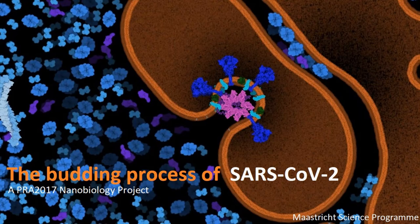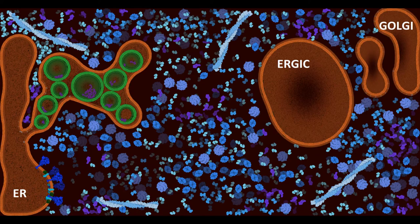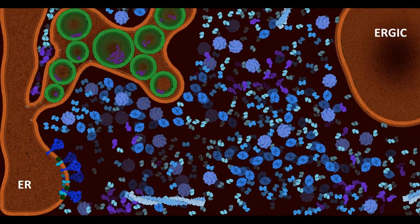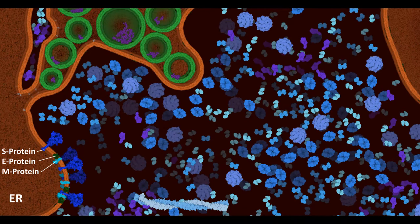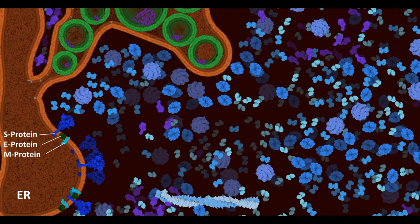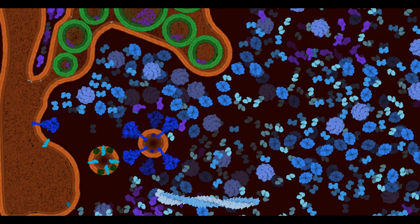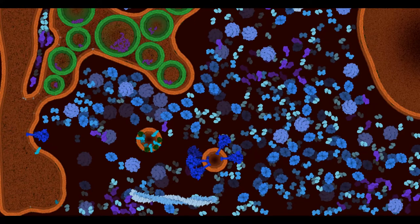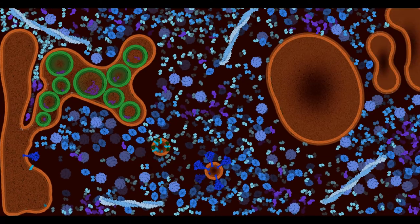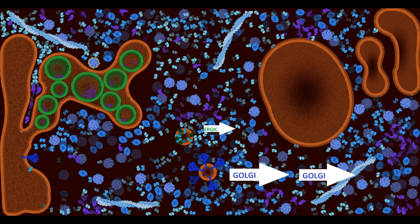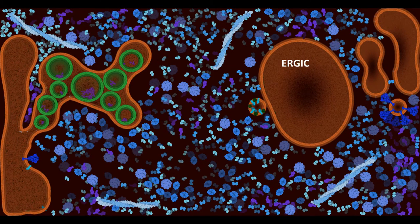The budding process of the novel coronavirus 2019. Once synthesized, the structural proteins S, M, and E are released from the endoplasmic reticulum within COPII vesicles, which will transport them to other cell compartments.